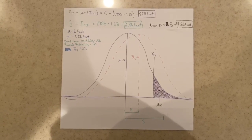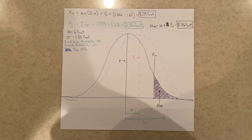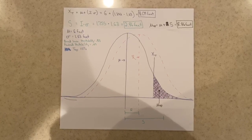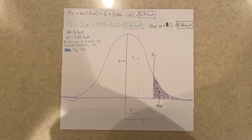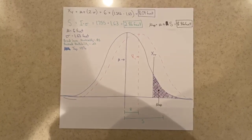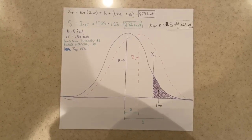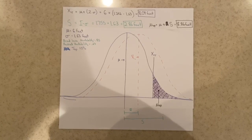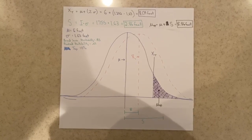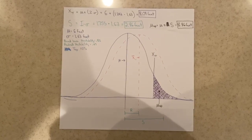This value, 2.86 feet, can then be added to the mean feather length of the current population to find the mean length of the selected parents' feathers, which comes out to be 8.86 feet.